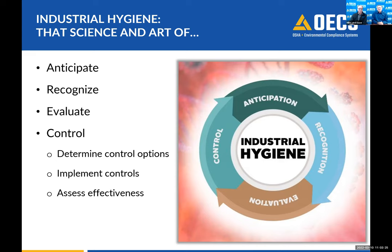Controls can be a lot of different options. Control measures are the result of your previous assessments, and you decide what's best. You certainly want to involve workers when considering control measures, because if you're installing physical controls, you want to make sure the design doesn't disrupt the workflow too much — otherwise workers may end up bypassing the control. Implement the controls and at some point assess whether they're effective. We'll get into this in more depth with a few slides ahead.